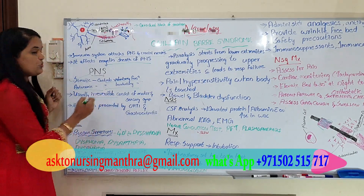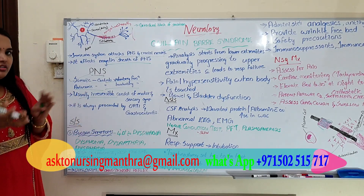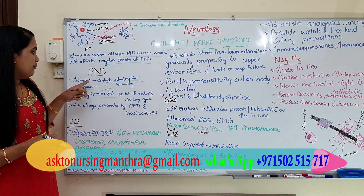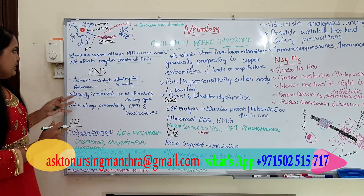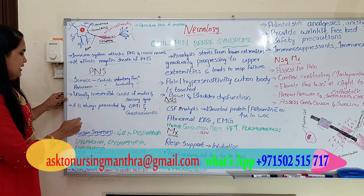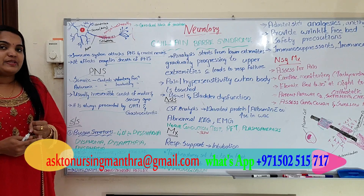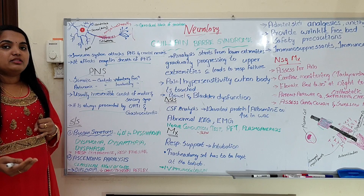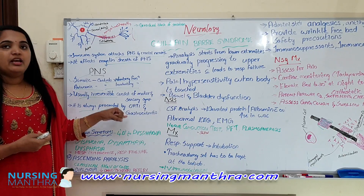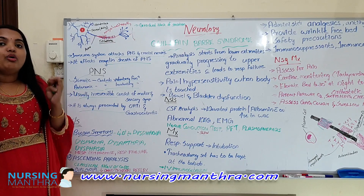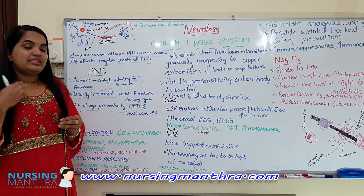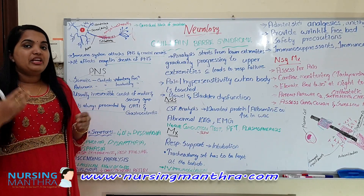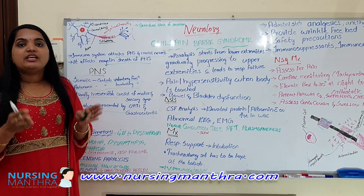This condition is usually irreversible and consists of both motor and sensory symptoms. GBS is always preceded by upper respiratory tract infections and gastroenteritis. Campylobacter jejuni is the main organism seen in gastroenteritis and upper respiratory tract infections. It is important to ask the patient whether they have had any respiratory illness or gastroenteritis in the past two weeks — take a detailed medical history.